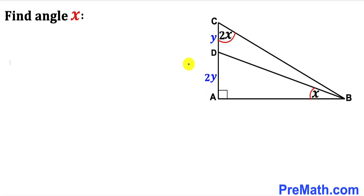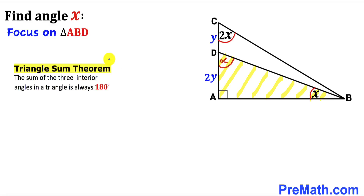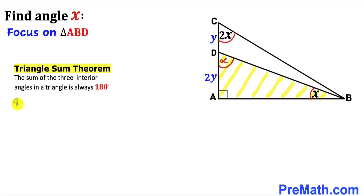Let's get started with the solution. Let's focus on this right triangle ABD — we know this is our 90-degree angle, this is angle X, and we want to figure out the remaining angle. I'm going to call this angle alpha. Recalling the triangle sum theorem, the sum of the three interior angles is always 180 degrees, so 90 degrees plus alpha plus X equals 180 degrees.